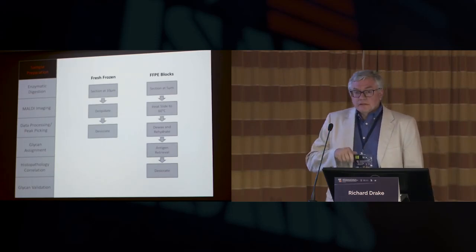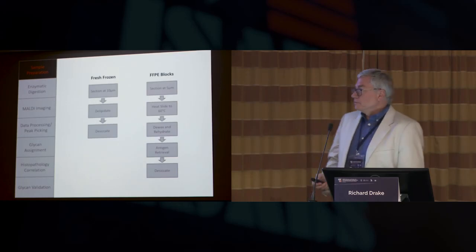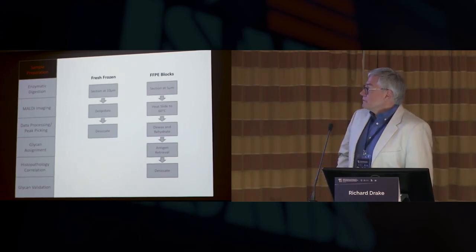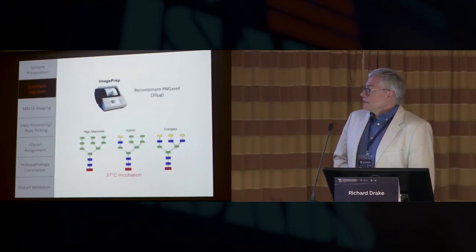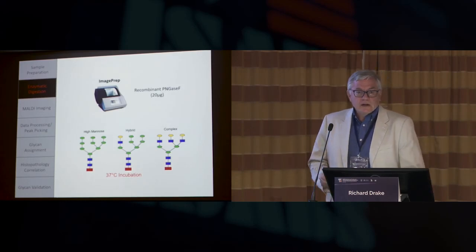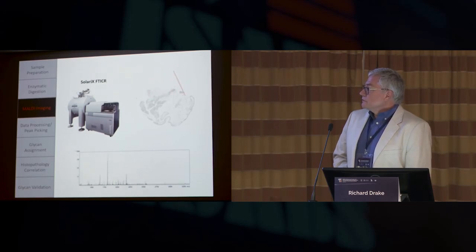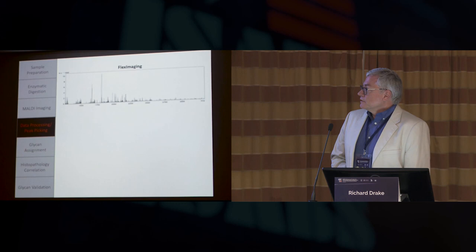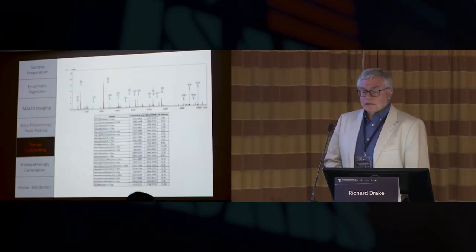Briefly, we started with the same workflow essentially that you would use to do immunohistochemistry on a FFPE tissue. We didn't want to change any of the workflows that the pathologist would have to use. So we adapted our workflows to what other people already do. Just dewaxing and antigen retrieval, instead of adding an antibody, we spray the PNGase enzyme directly onto the tissue. It's a very fine molecular coating, not liquid in any sense. It looks dry when you apply it.